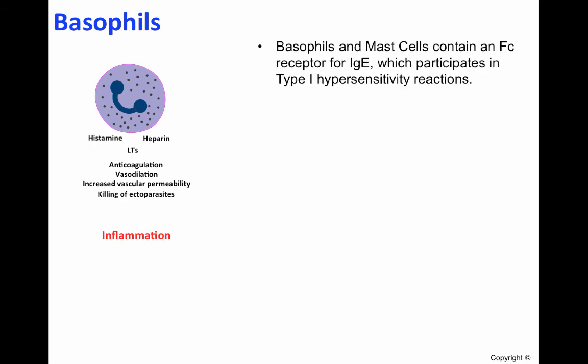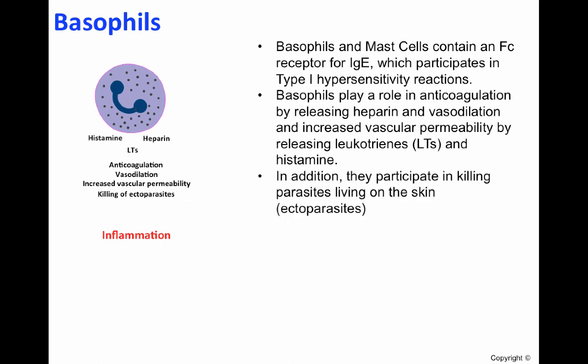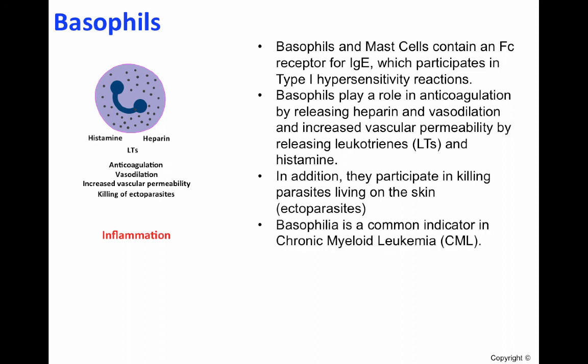Basophils and mast cells contain an Fc receptor for IgE, which participates in type 1 hypersensitivity reactions. Basophils play a role in anticoagulation by releasing heparin, and in vasodilation and increased vascular permeability by releasing leukotrienes and histamine. They also participate in killing parasites living on the skin. Finally, basophilia is a common indicator in chronic myeloid leukemia, or CML, where you can see an increase of up to 20% of basophils in the blood.